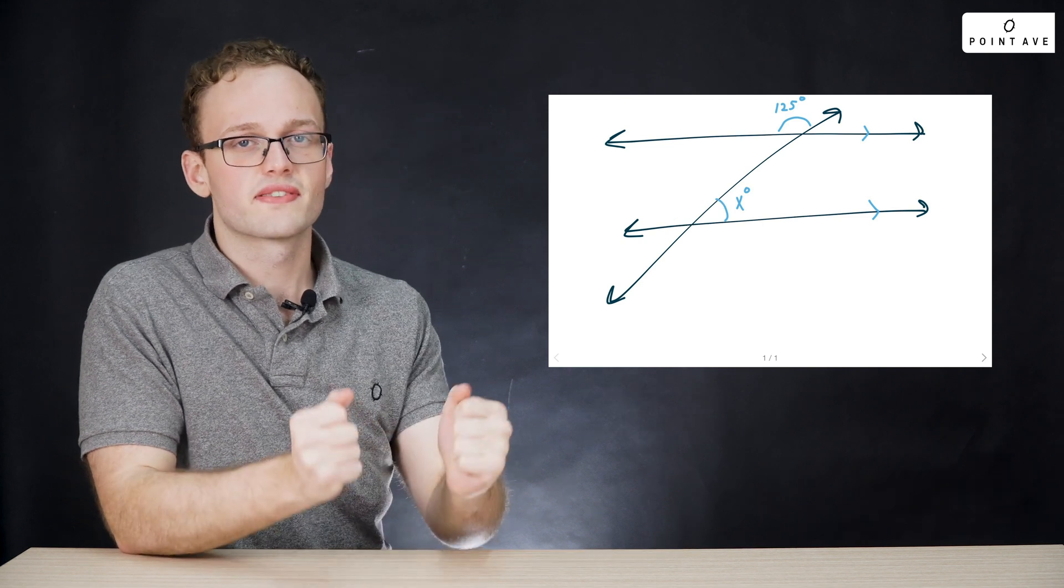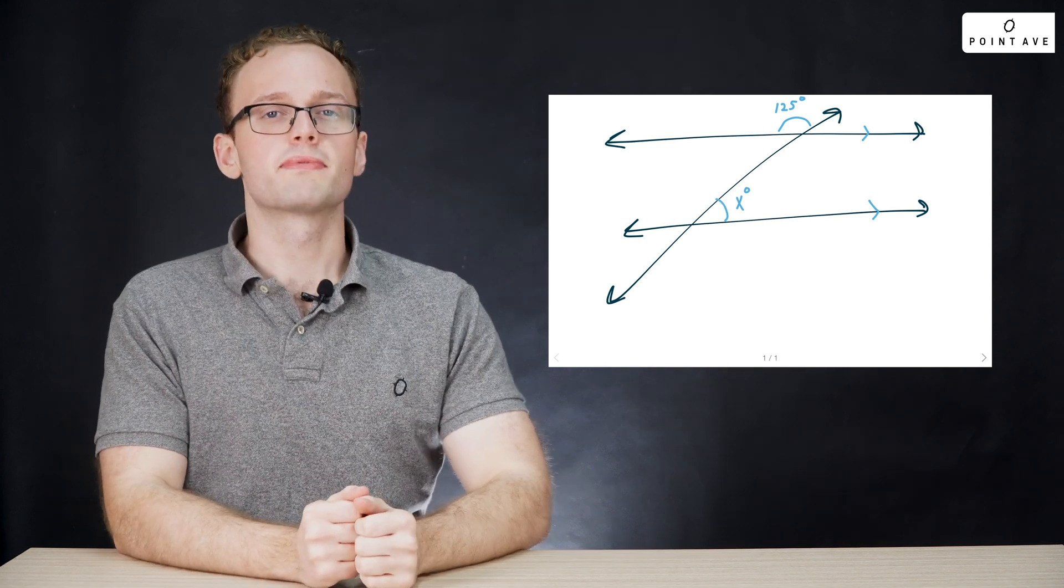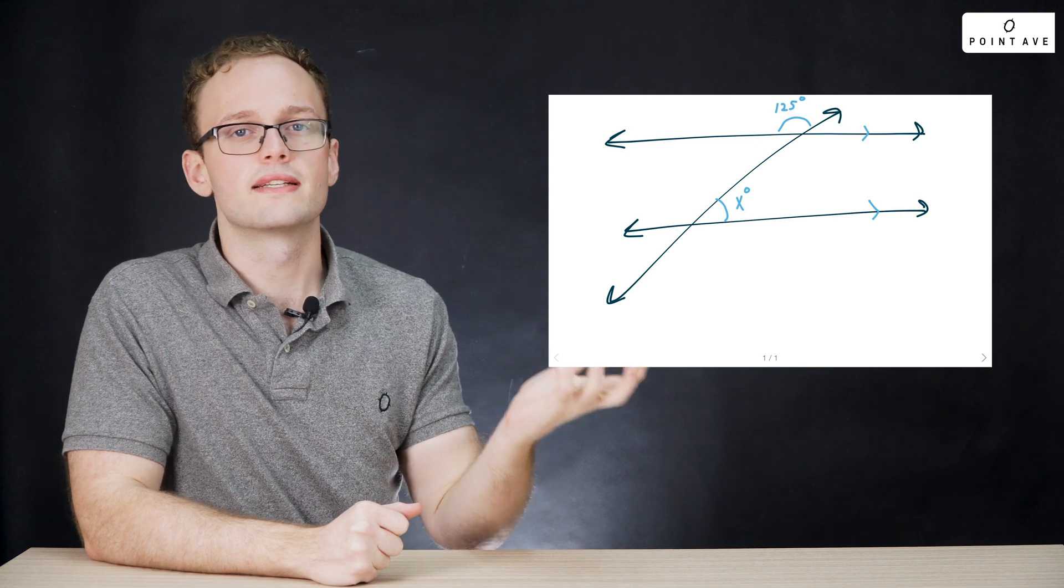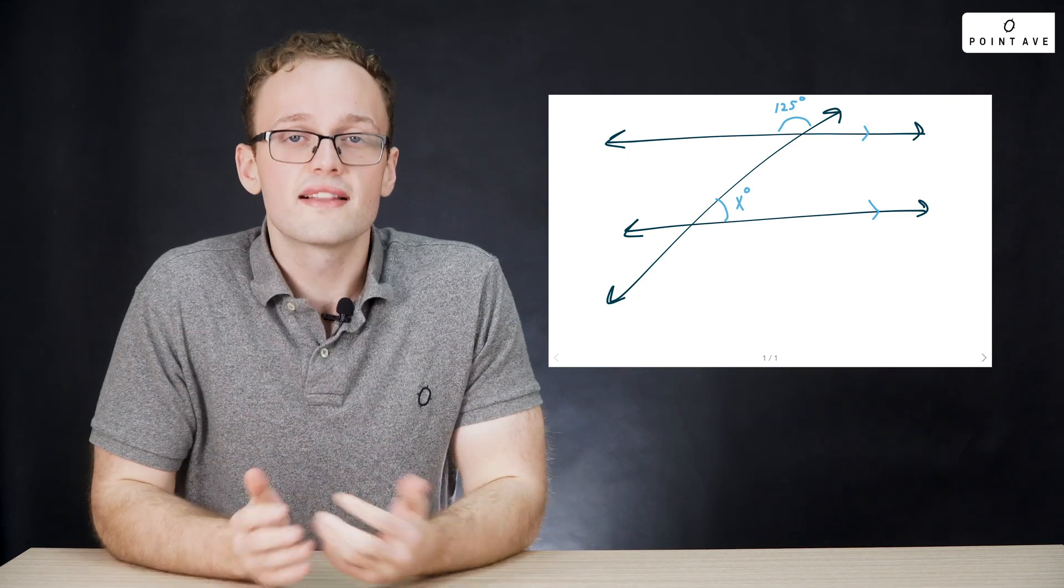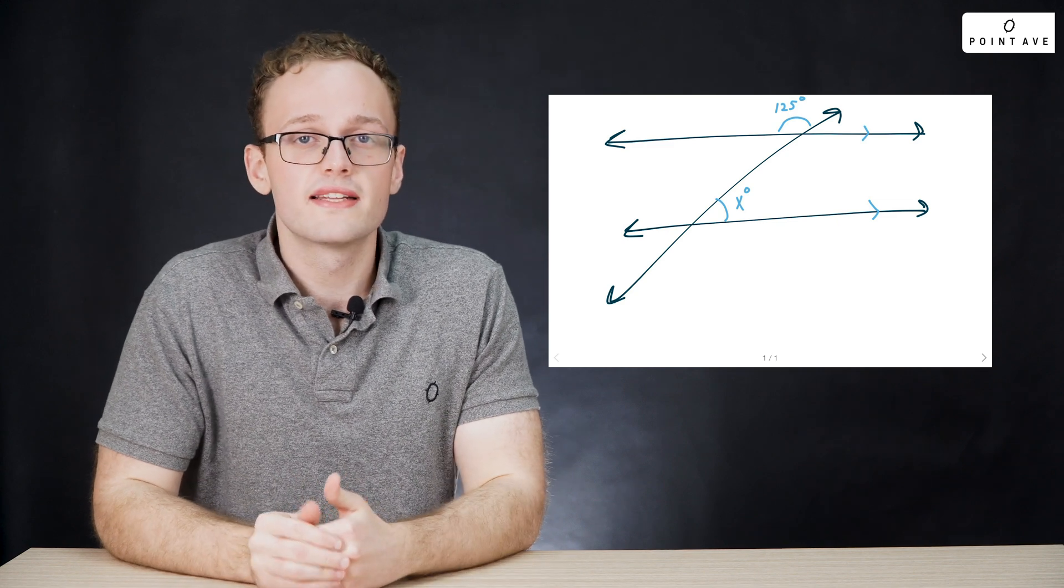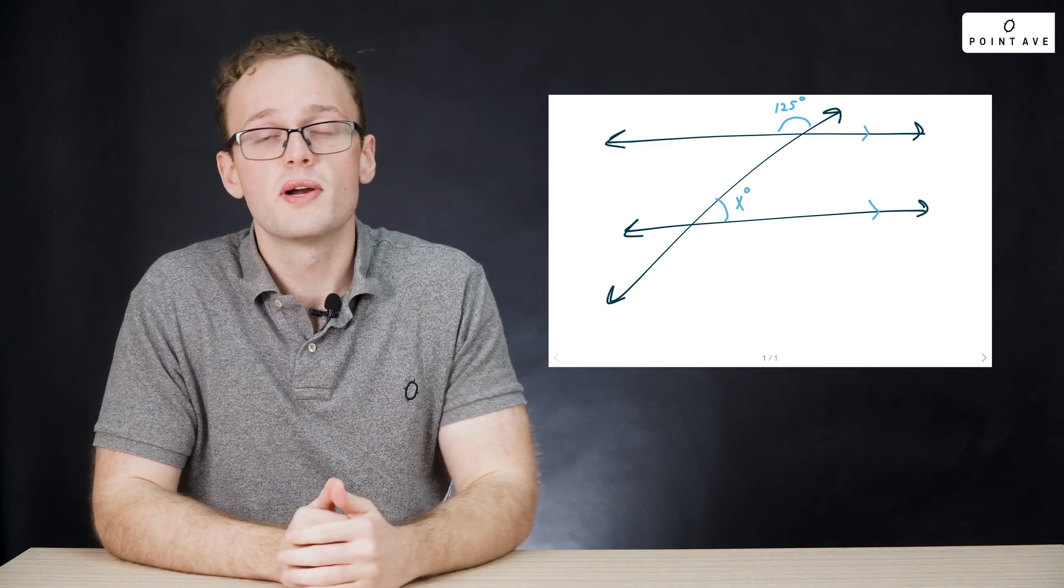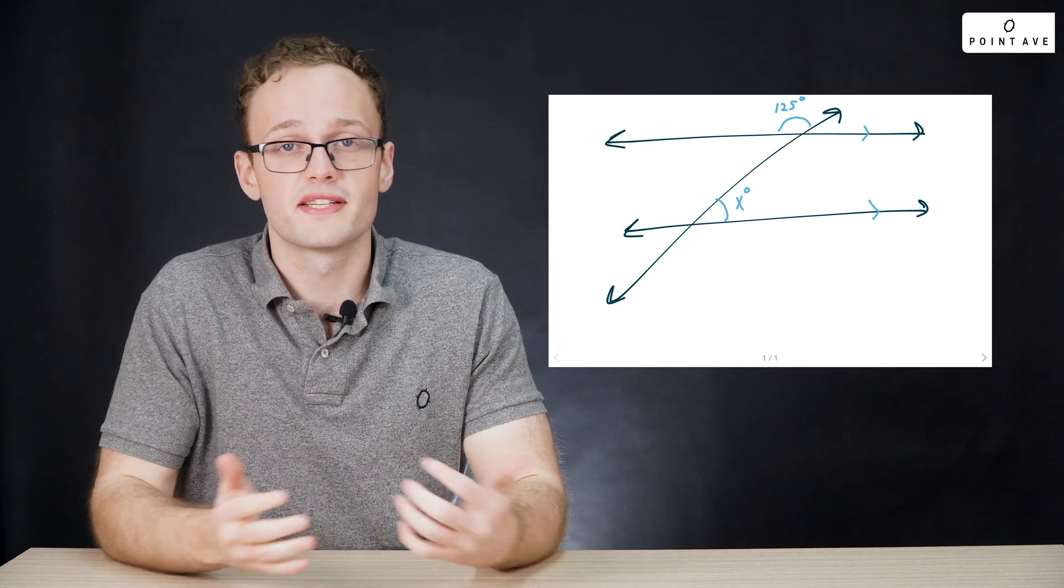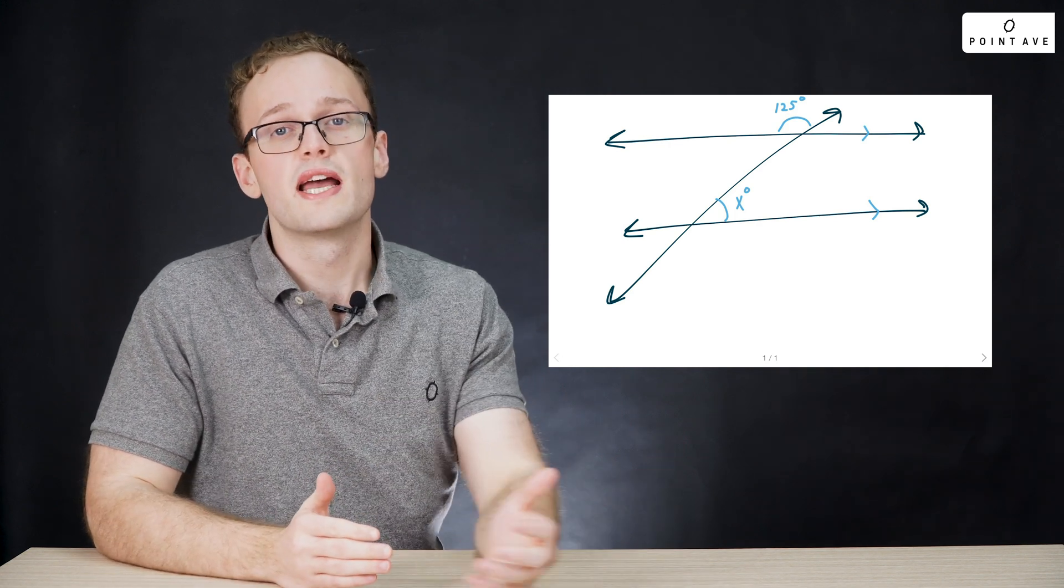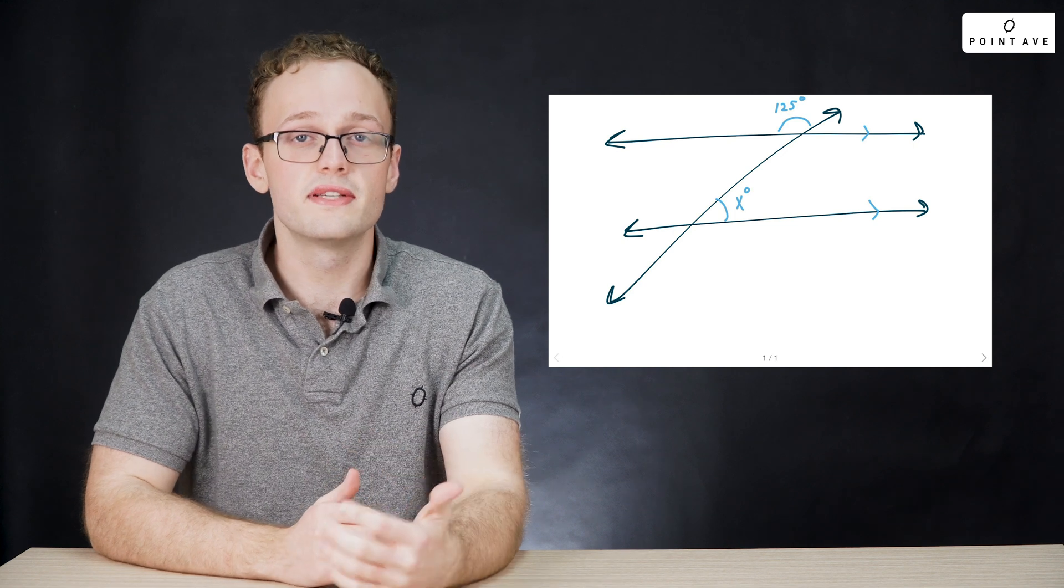First off, transverse lines. Here we see an example, a classic solve for x problem. So how do we end up relating these two seemingly unrelated angles? Well, that is with the magic of transverse lines. In class, you probably learned a lot of complicated things like vertical angle theorem or corresponding angle theorem, but go ahead and throw those out the window, and we're going to learn this in a much more intuitive and simple way.